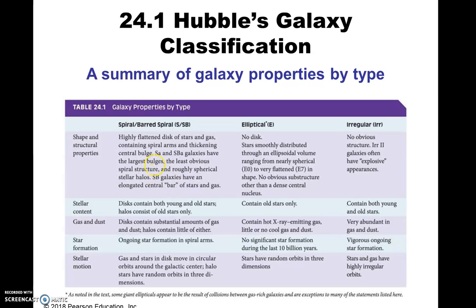The disc contains both young and old stars, and the halos generally have very old stars. You see almost no gas and dust in the halos. In the spiral arms of barred spirals and regular spirals, that's where you see ongoing star formation, and it's still taking place.